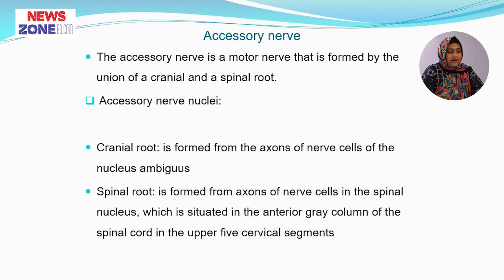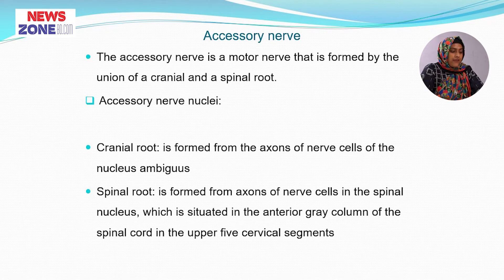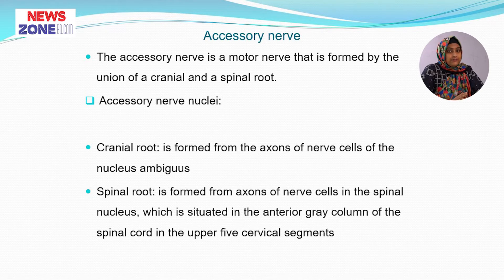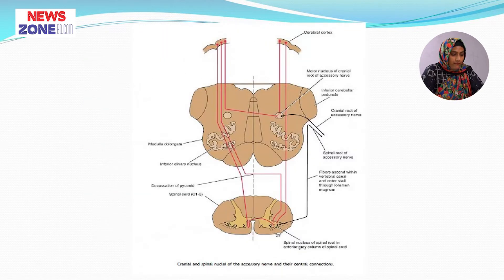The eleventh cranial nerve is the accessory nerve. The accessory nerve is a motor nerve formed by the union of the cranial root and the spinal root. The cranial root is formed from the axons of nerve cells of the nucleus ambiguus, and the spinal root is formed from the axons of nerve cells in the spinal nucleus situated in the anterior gray column of the spinal cord in the upper five cervical segments. This information is very important — how the cranial root and the spinal root of the accessory nerve are formed.